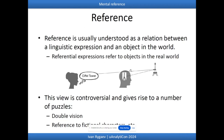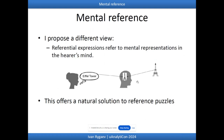Reference is usually understood as a relation between a certain type of linguistic expressions and objects in the real world — referential expressions refer to objects in the real world. That might work well for mathematically formulated theories, but I will argue that if we apply this to natural language, this view is exactly what leads to a number of well-known reference puzzles.